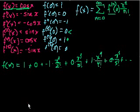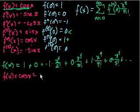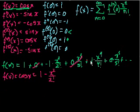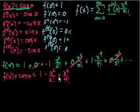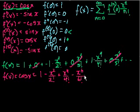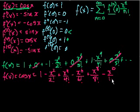So let me clean this up, and hopefully the pattern emerges. f of x, which is equal to cosine of x, equals — getting rid of the zeros — 1, minus x squared over 2 factorial. The zero terms go away. Then the next non-zero one is plus x to the fourth over 4 factorial. The fifth term goes away, but then the cycle continues: minus x to the sixth over 6 factorial. The derivative of minus sine of x is minus cosine of x, giving us the minus 1. Then plus x to the eighth over 8 factorial, minus x to the tenth over 10 factorial, and we keep going.